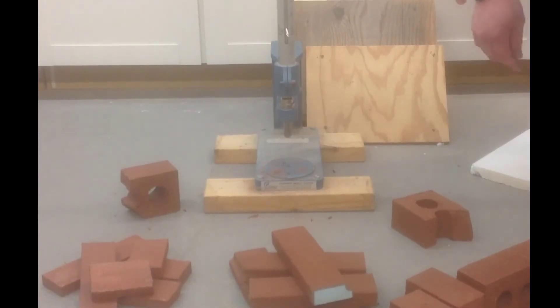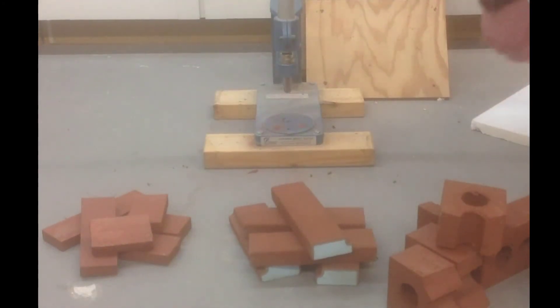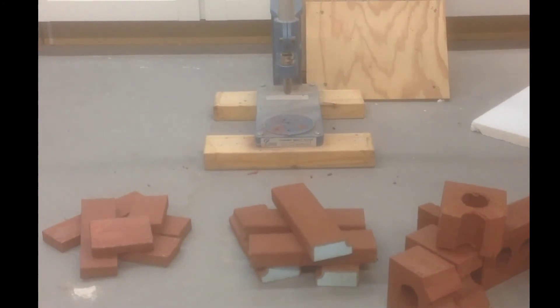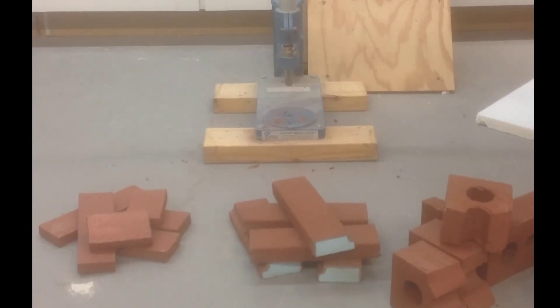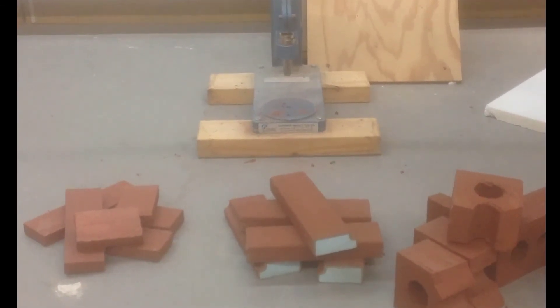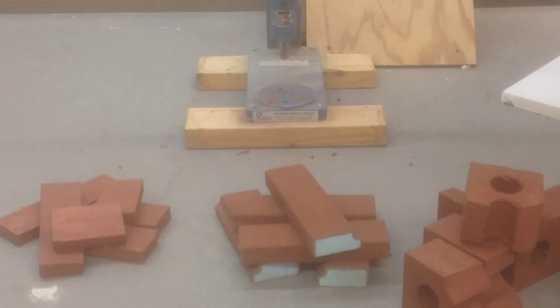So again, using a simple test called the Gardner Impact Tester, drop impact at 48 inch pounds, you can see exactly what's happened. Let's get a close up. New brick intact, and clay brick snapped in half. There you have it. Thanks, everyone.